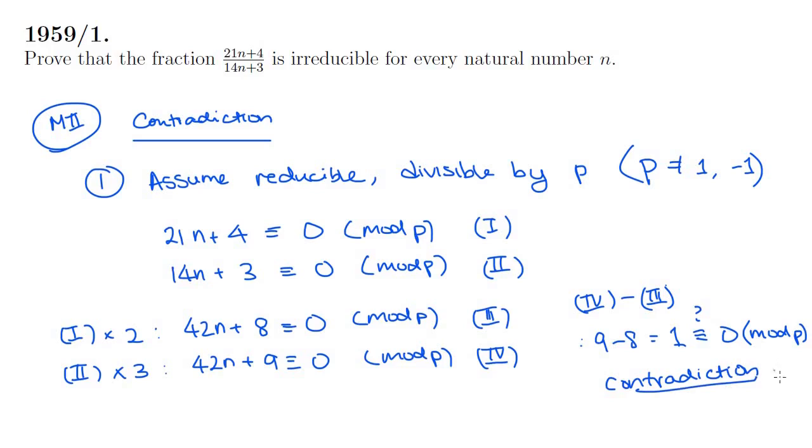In other words, our assumption is incorrect. And in fact, that fraction is not reducible, but irreducible. And that is method 2, proof by contradiction.